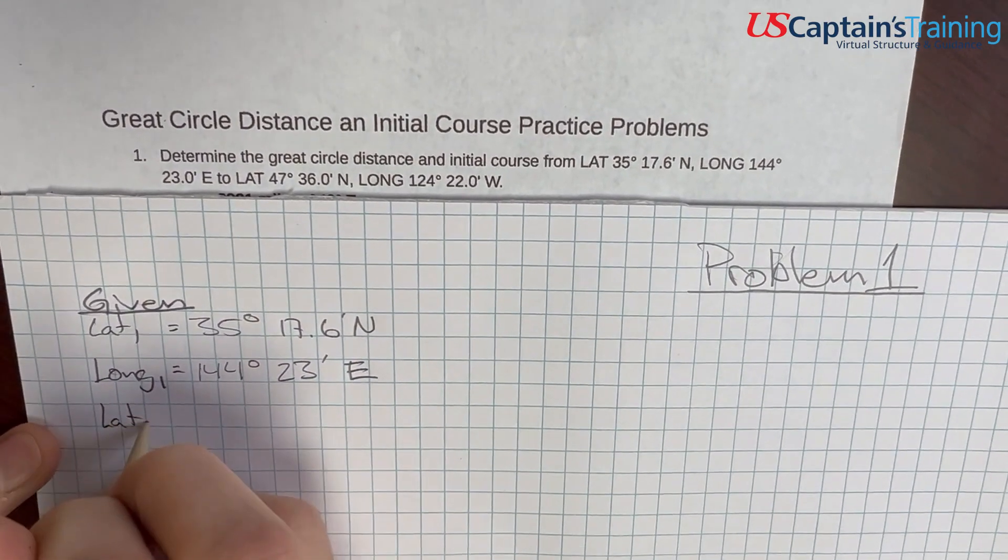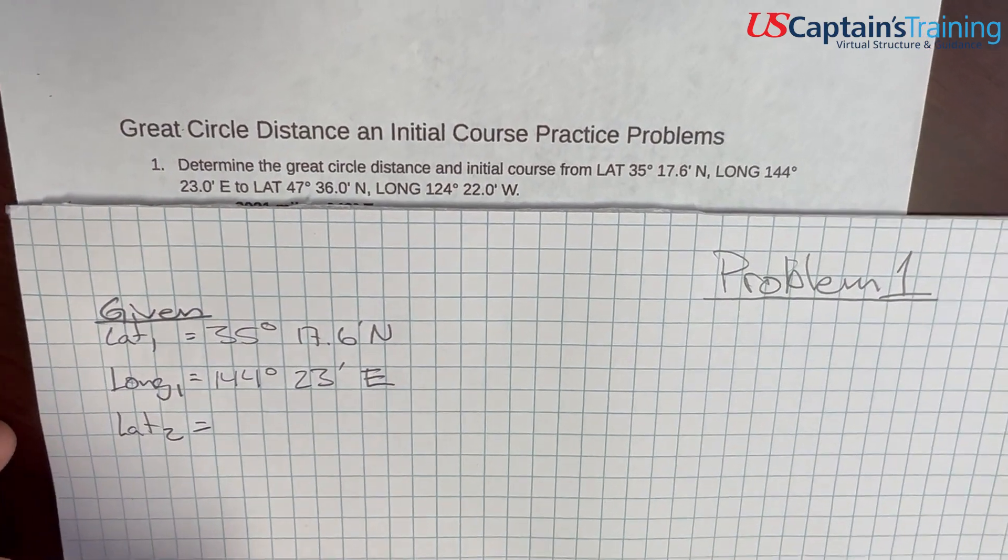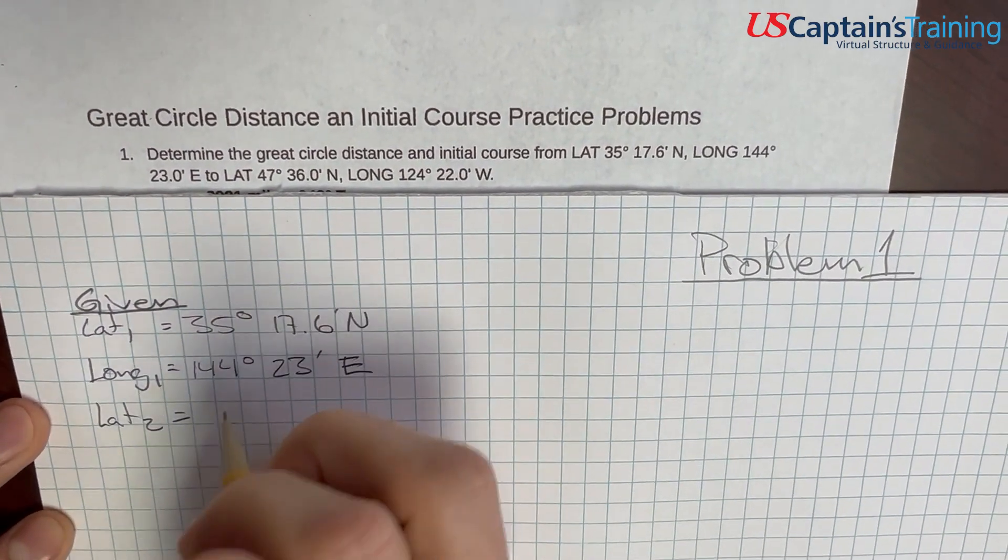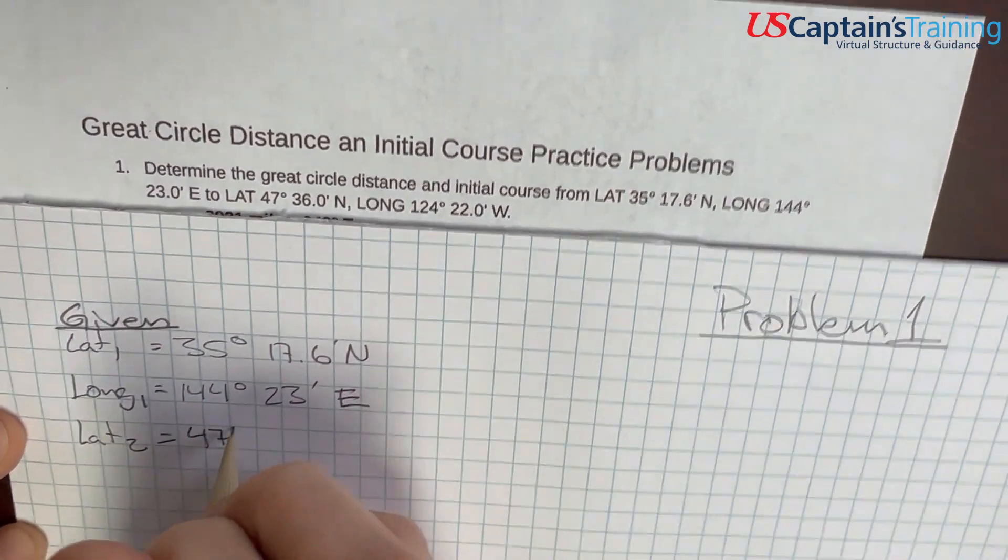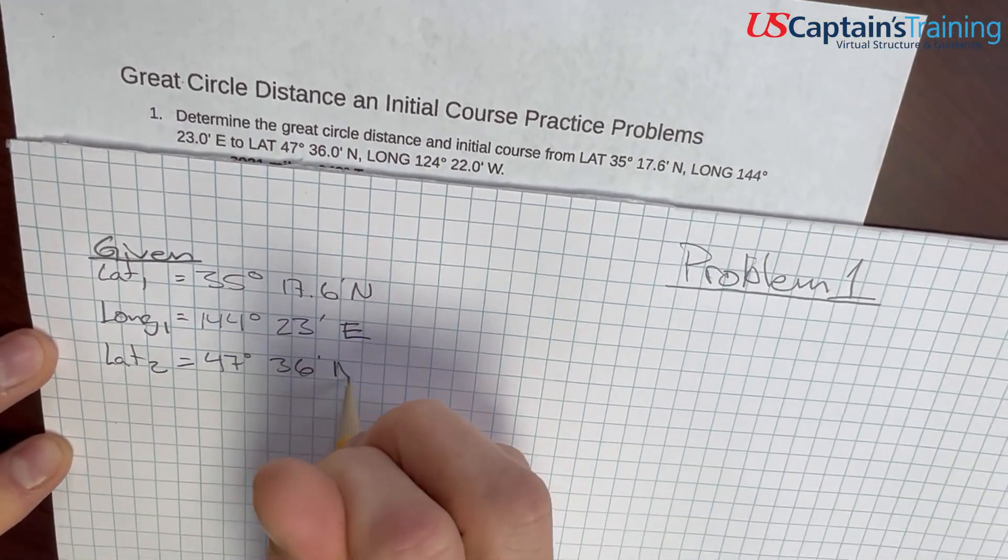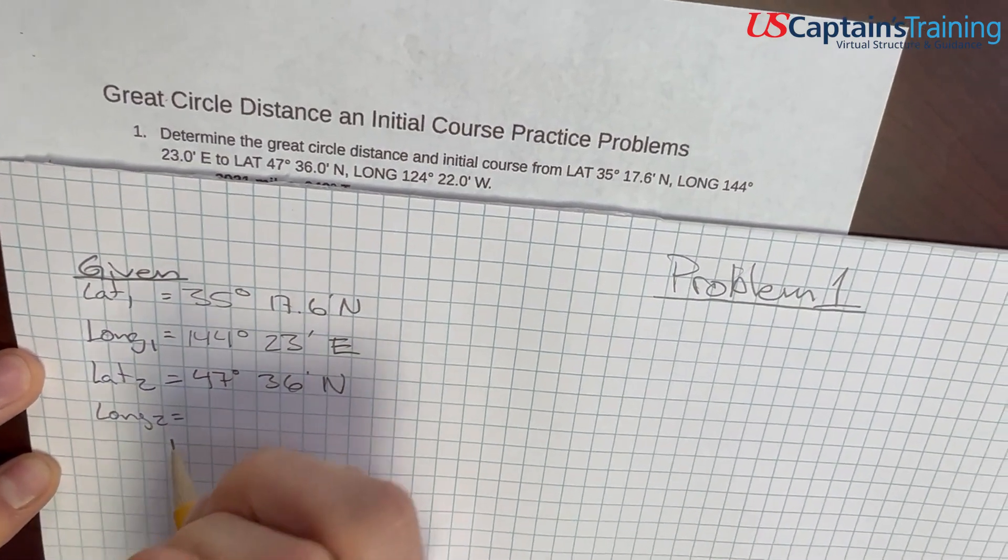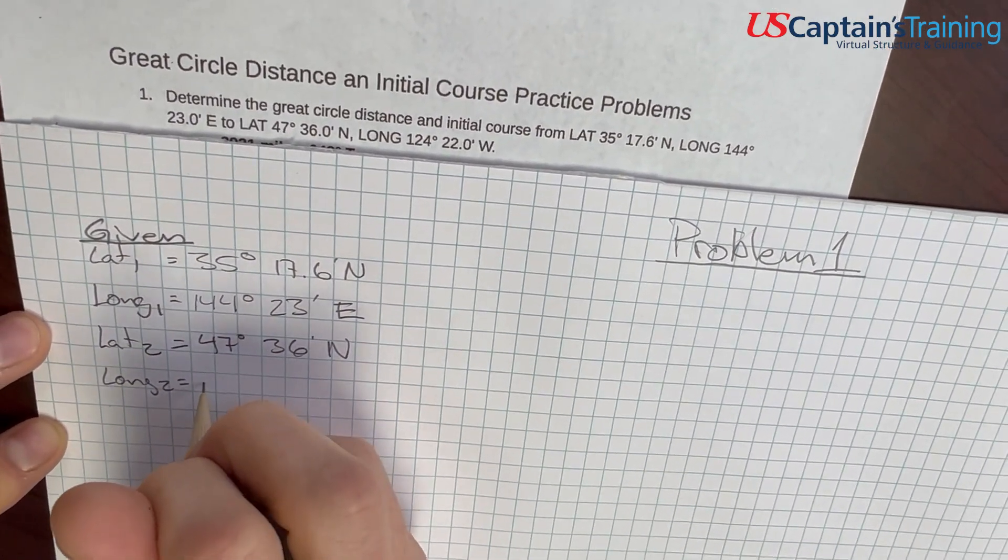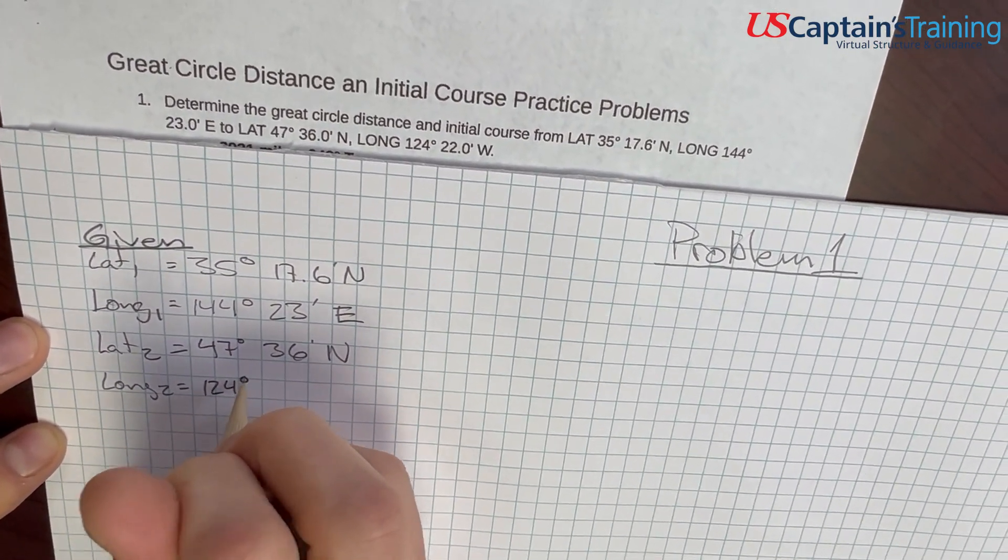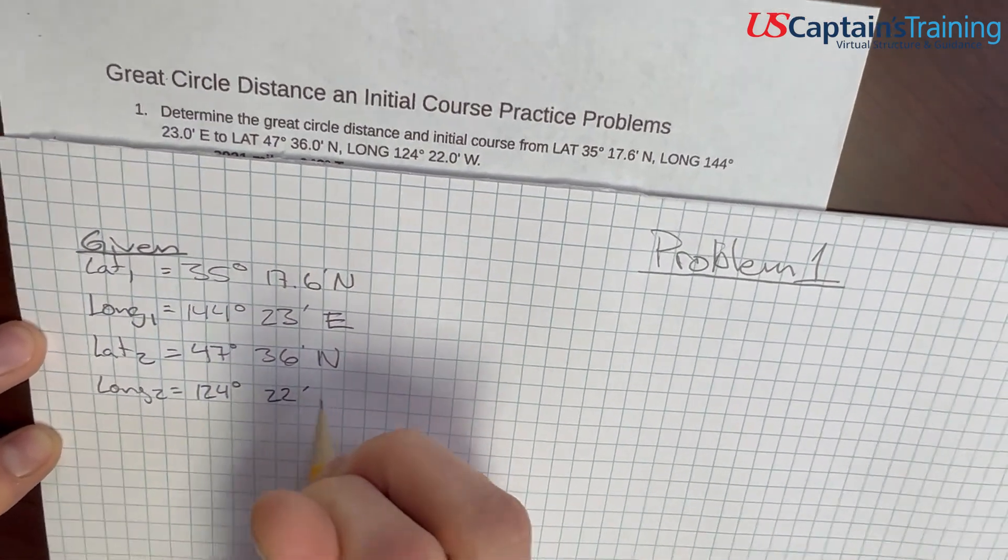And then lat 2 is equal to 47 degrees, 36 minutes north, and longitude 2 is equal to 124 degrees, 22 minutes west.